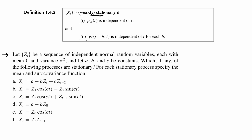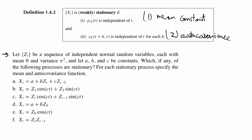From the Brockwell and Davis book, a time series is weakly stationary if the first moment does not depend on time t — in other words, the mean is constant — and if the autocovariance function for t and t plus lag h is independent of time t. So the autocovariance of x_t is also constant.